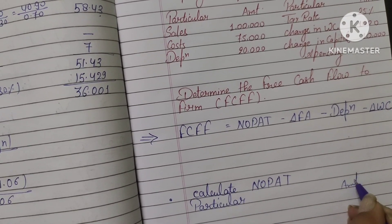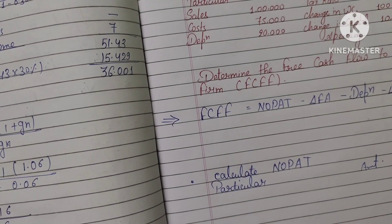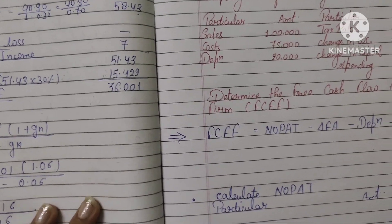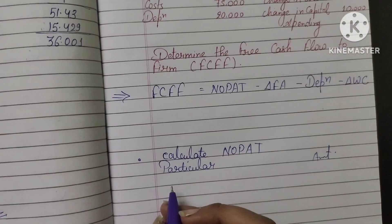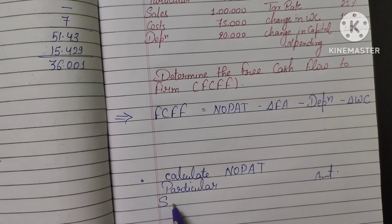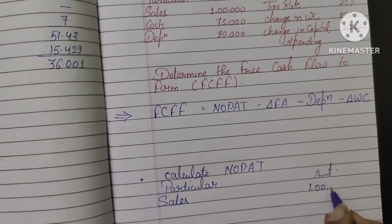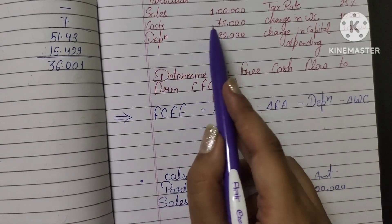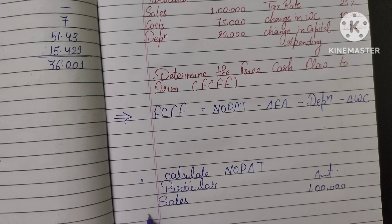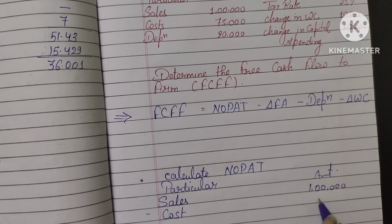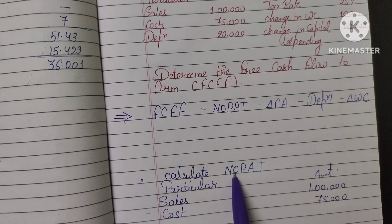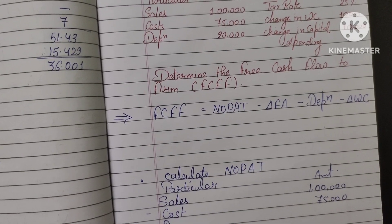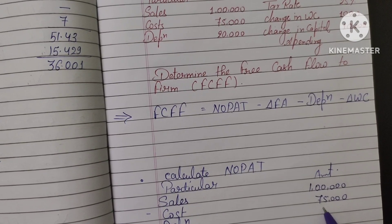To calculate NOPAT, we start from sales. Sales are given as 1 lakh. We subtract cost of 75,000. Then we subtract depreciation of 20,000. This gives us Earnings Before Interest and Tax (EBIT) of 5,000.